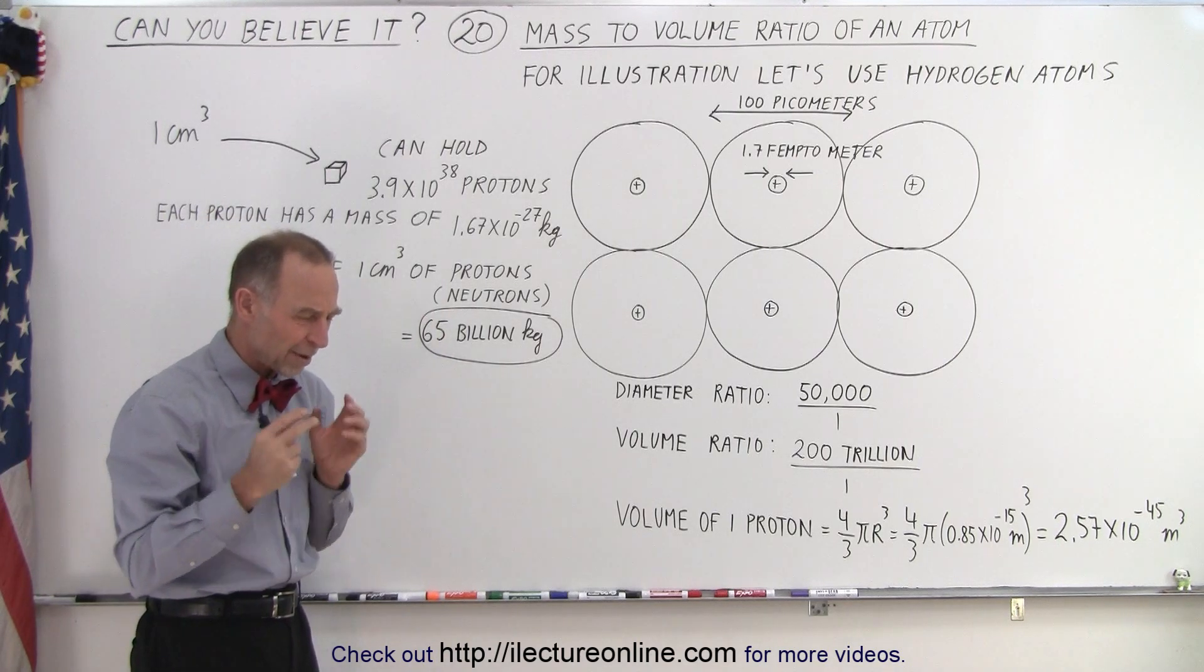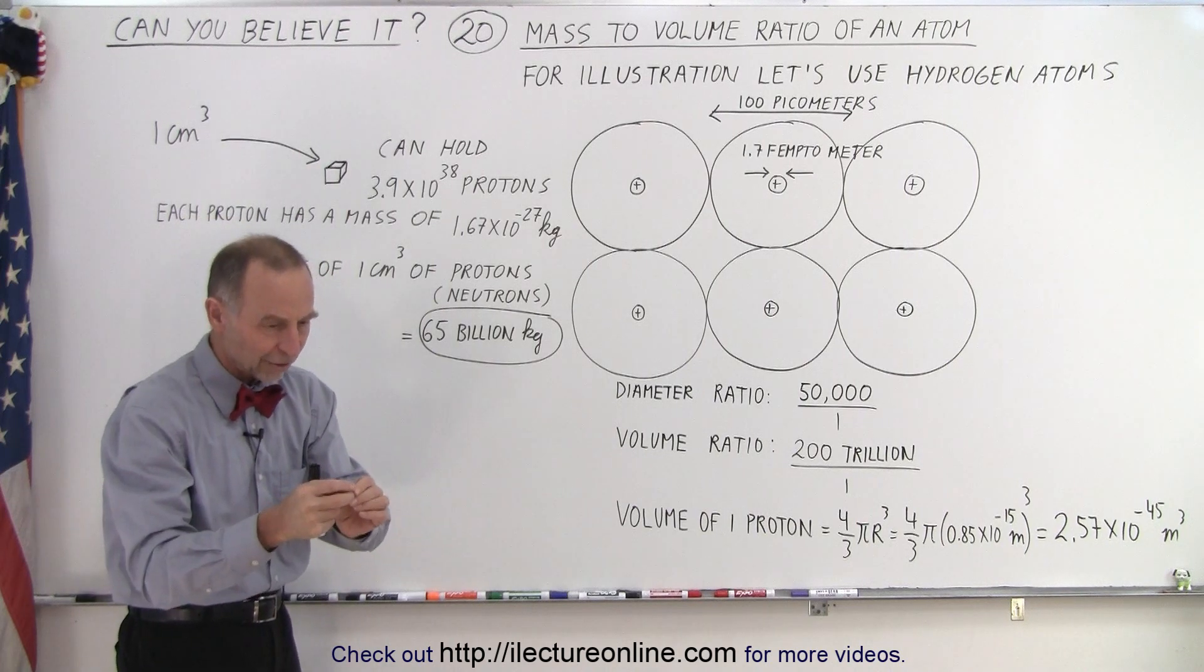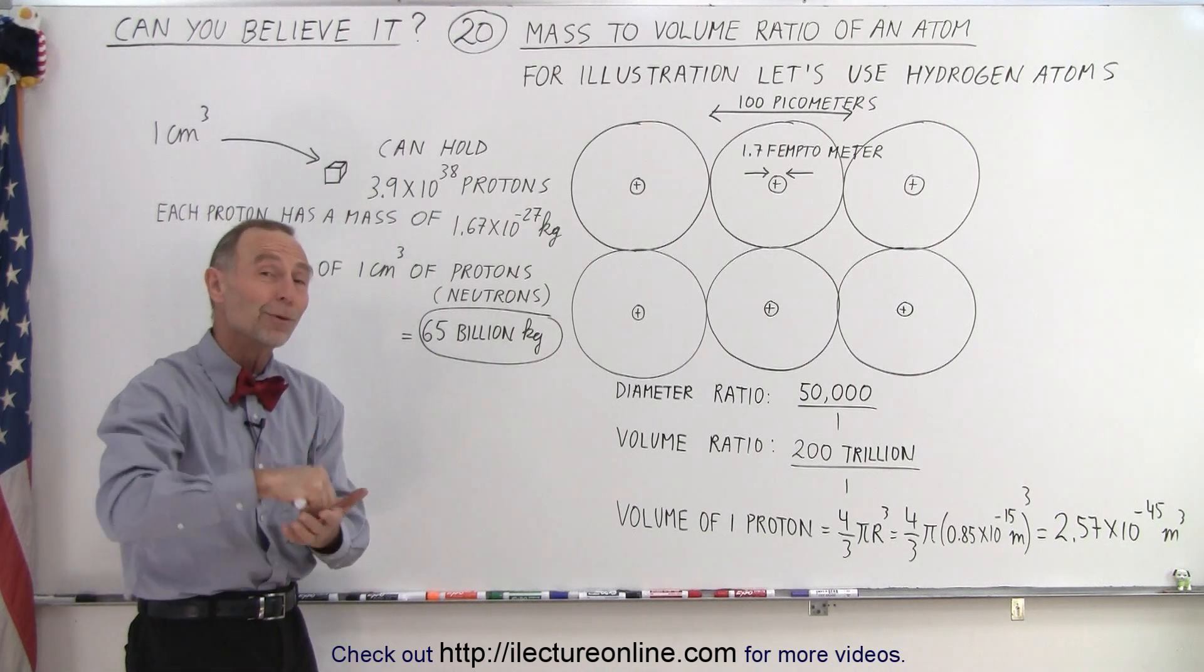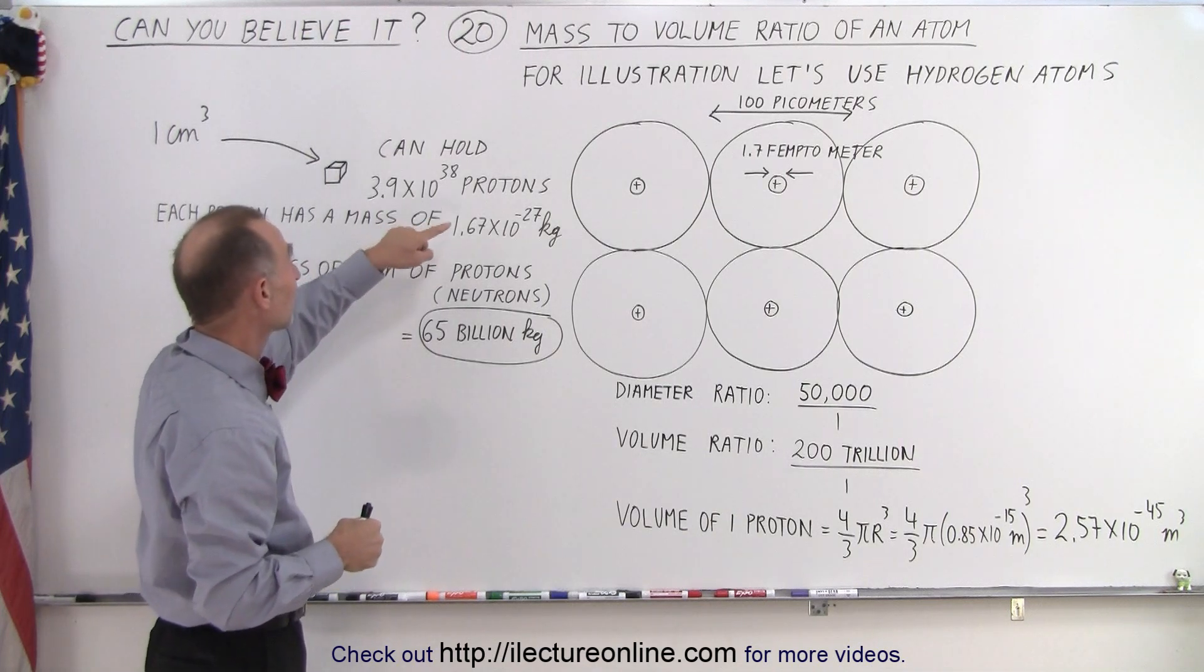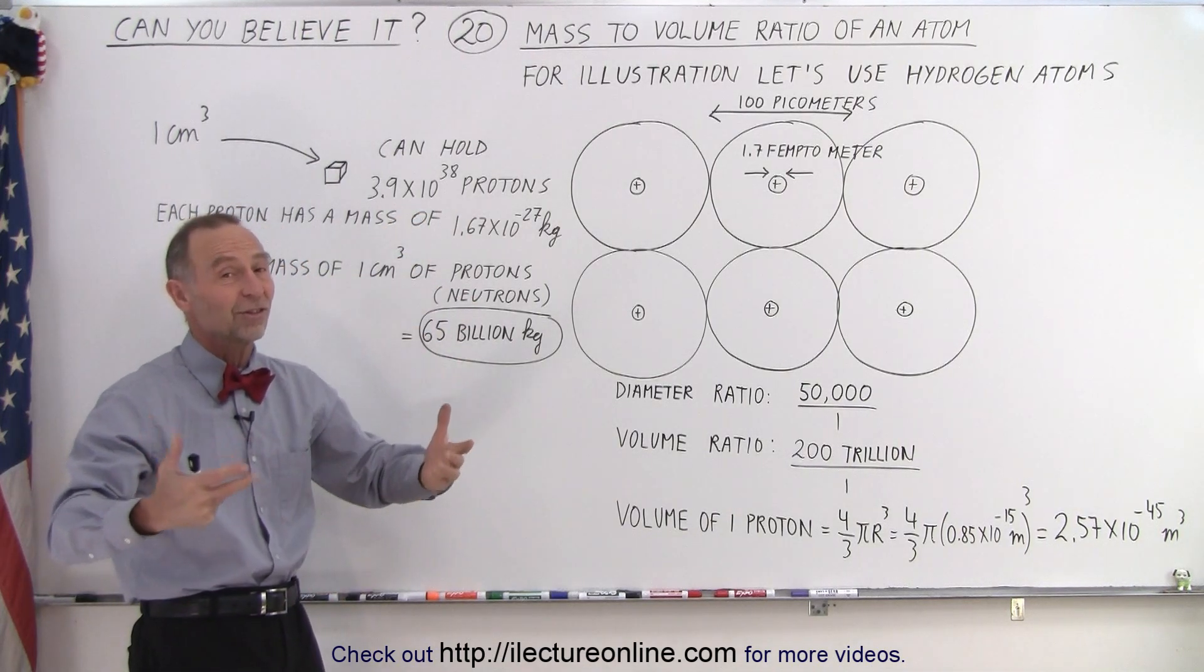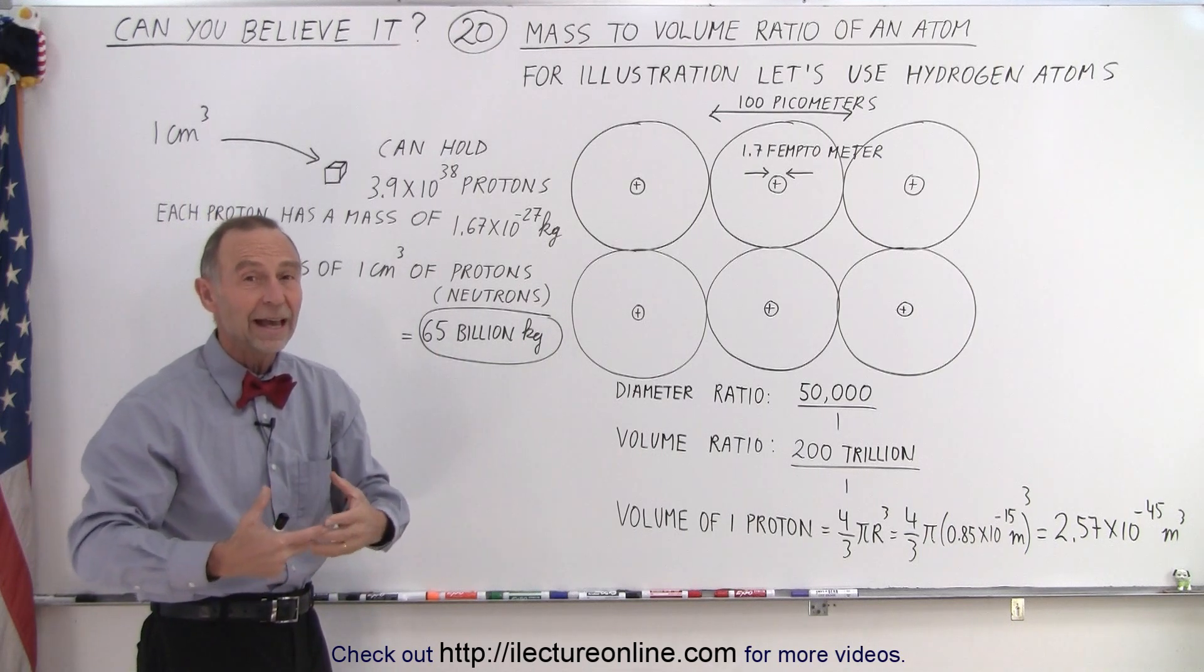So if we somehow could stuff a cube about one cubic centimeter in size full of protons—now you may say, wait a minute, protons repel each other so there's no way you can stuff that many protons in a cube, and that's absolutely correct. But of course we could do it with neutrons because neutrons do not have charge and they're pretty well the same size and same mass as a proton.